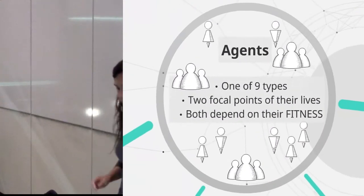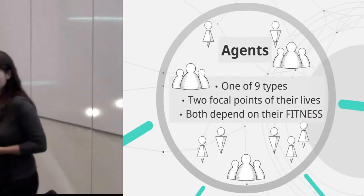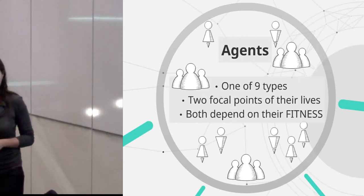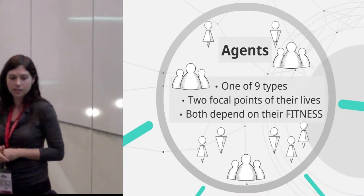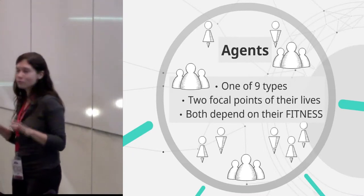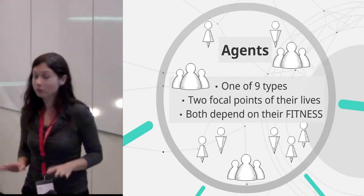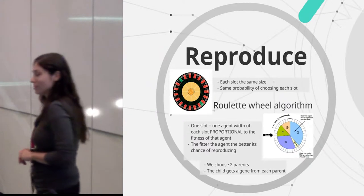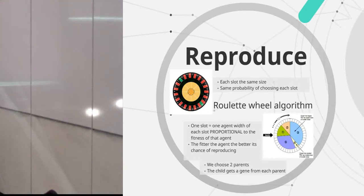And so the simulation is very similar except for I kept the generalist. So instead of having six types, I have nine types of agents and they have two things they like doing in their lives. And both of those things depend on fitness and they do reproduce. So that's their first thing.